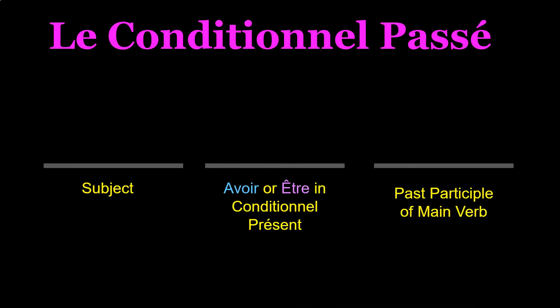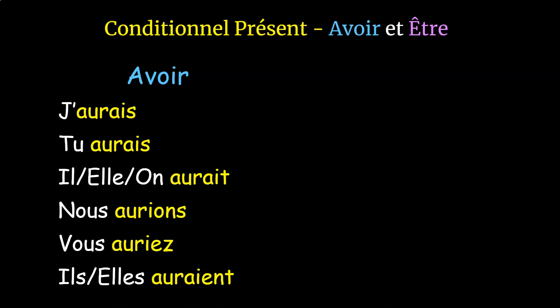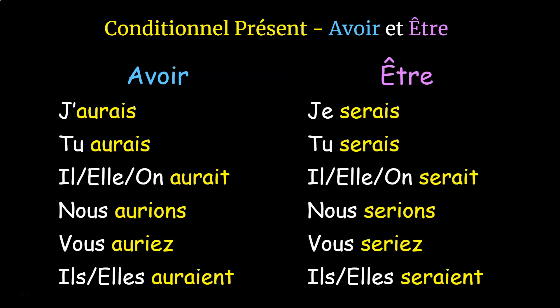The formula for conjugating le conditionnel passé is: subject + either avoir or être as the helping verb in le conditionnel présent + the past participle of your main verb. A simple example: vous auriez fini. Avoir in le conditionnel présent is: j'aurais, tu aurais, il/elle/on auraient, nous aurions, vous auriez, ils/elles auraient. Être is: je serais, tu serais, il/elle/on seraient, nous serions, vous seriez, ils/elles seraient.